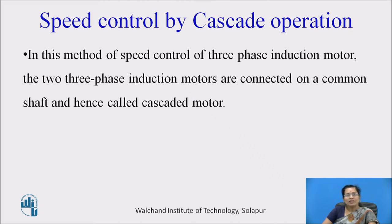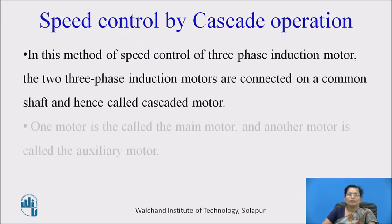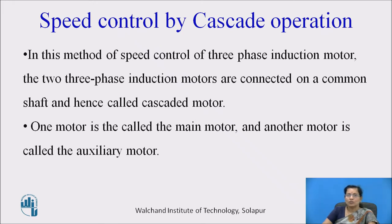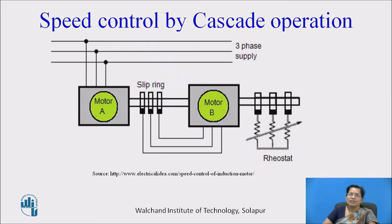Speed control by cascade operation. In this method, two three-phase induction motors are connected on a common shaft and hence called a cascaded motor. One motor is called the main motor and the other is called the auxiliary motor. As you can see in this diagram, motor A is the main motor and motor B is the auxiliary motor. The two motors are connected with the same shaft and with slip rings.